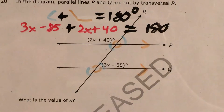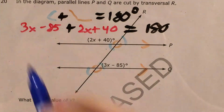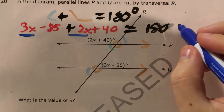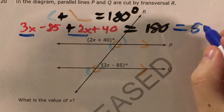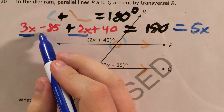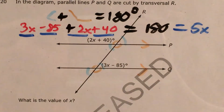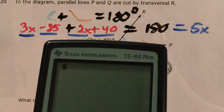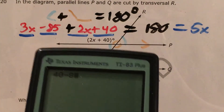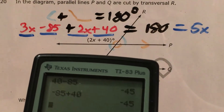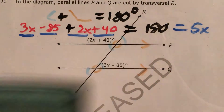I took out all the degree signs to make the problem a little less cluttered. I'm going to combine like terms. I'll look at 3x and plus 2x — 3x plus 2x is just 5x. Then I look at minus 85 and plus 40: 40 minus 85, or negative 85 plus 40, either way I get negative 45.